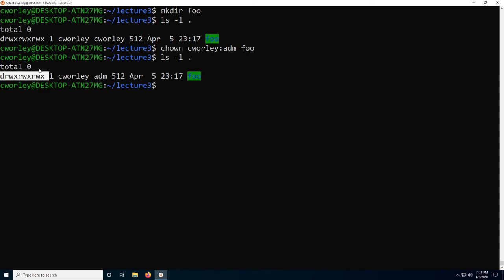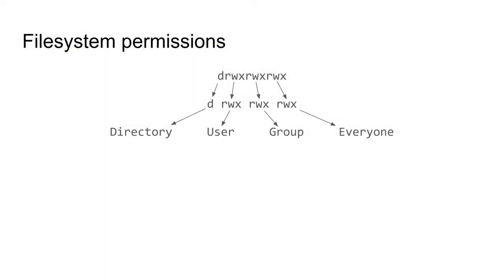So what's this string — d rwx rwx rwx? Going back to the slides to break it down: the 'd' just means we're looking at a directory. The first 'rwx' tells us the user has read, write, and execute permissions. The second tells us group members of ADM have those same permissions. And the final one tells us everybody else has those same permissions as well.